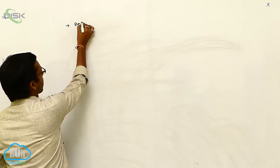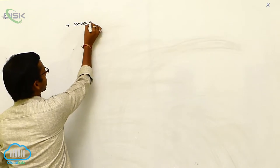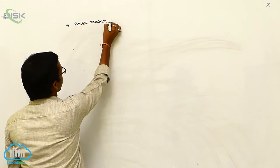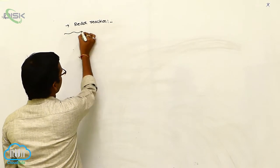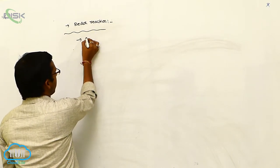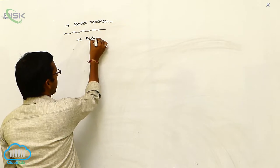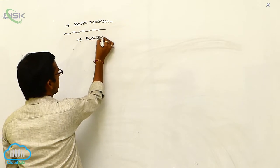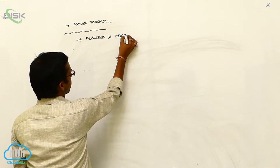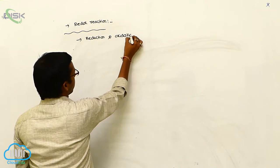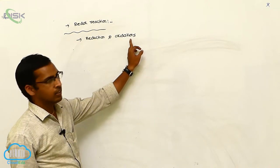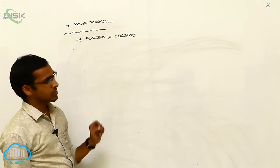Let's discuss redox reactions. Reduction and oxidation reactions are taking place in a cell at the same time. This is called as redox reactions.